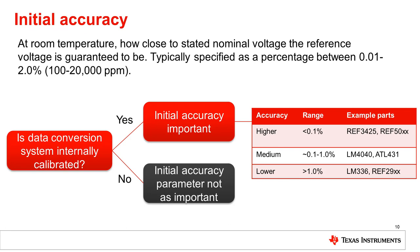Initial accuracy is a reference error compared to the nominal output voltage. This is typically specified as a percentage. Initial error is normally defined under a strict set of operating conditions. The specific test conditions will vary from device to device, but it is important to know that deviating from these conditions may lead to additional error.